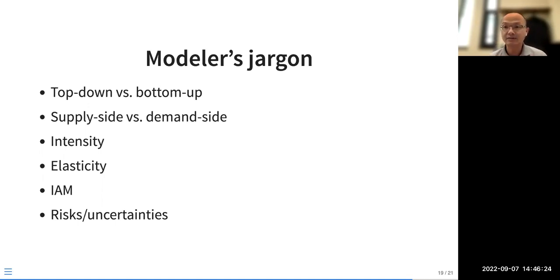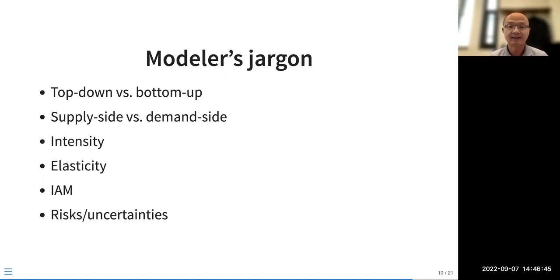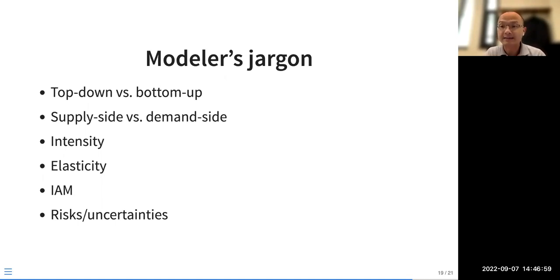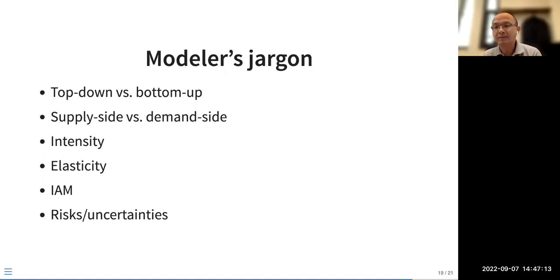Elasticity describes the relationship between variables — how big a change in one leads to change in the other, for example how changes in GDP relate to changes in energy consumption. IAM — Integrated Assessment Model — is a type of model that integrates the climate model, economic model, energy system model, and carbon emission model into a unified system to understand the relationship between energy use, climate impact, and economic impact.